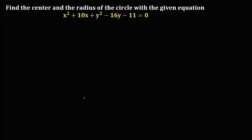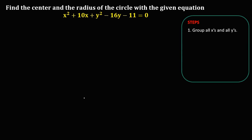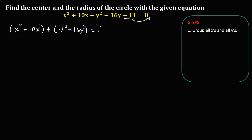First, we need to write this equation in standard form. We need to group all x and all y. So from this given equation, group all x: x squared plus 10x, then plus group all y: y squared minus 16y. Then this negative 11 is transposed to the other side, so this becomes positive 11.